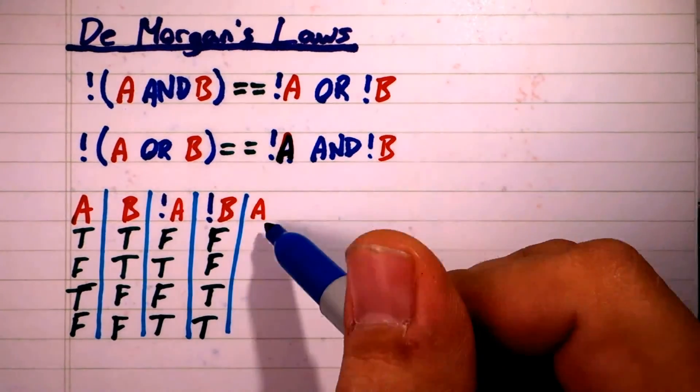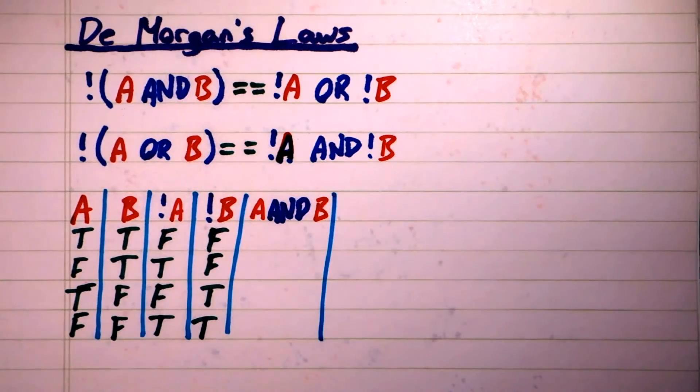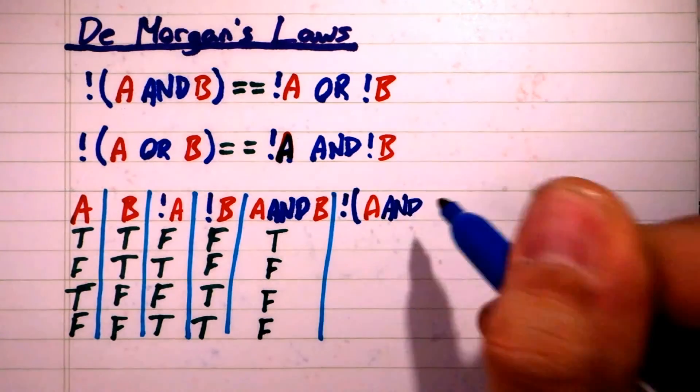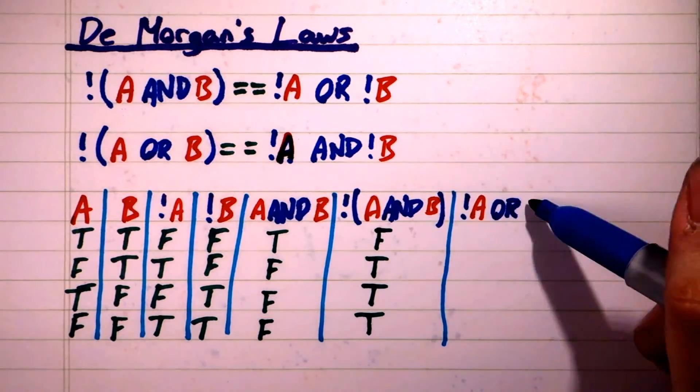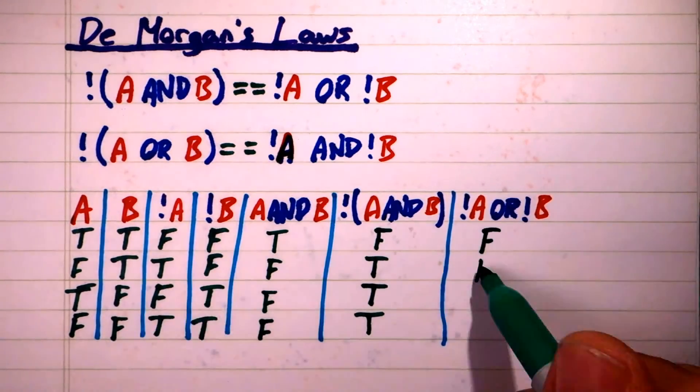Next, let's create A AND B. Now, we can negate A AND B to get NOT A AND B. Finally, we can create NOT A OR NOT B.